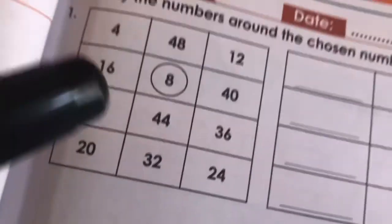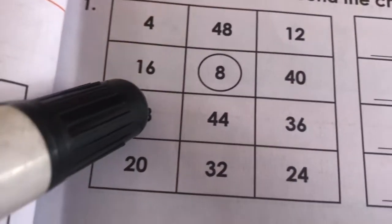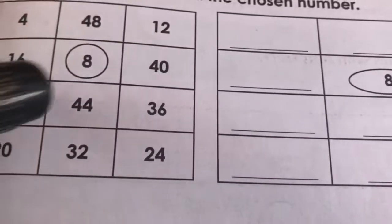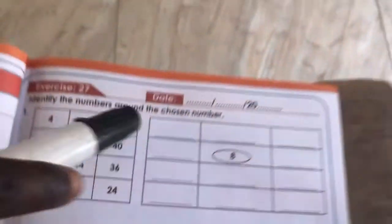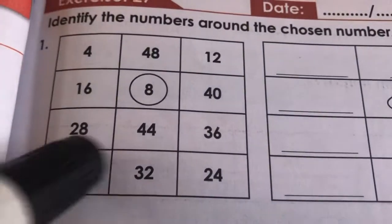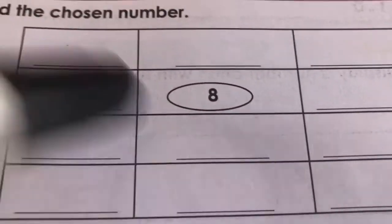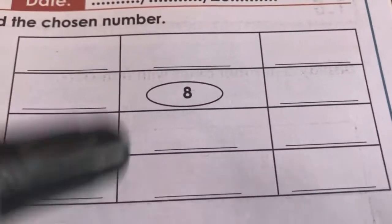Now, which number is to the left of 8? The number to the left of 8 is 16. And the number to the right of 8 is 40. For me, surely you are going to copy this chart over here or do the answers here.